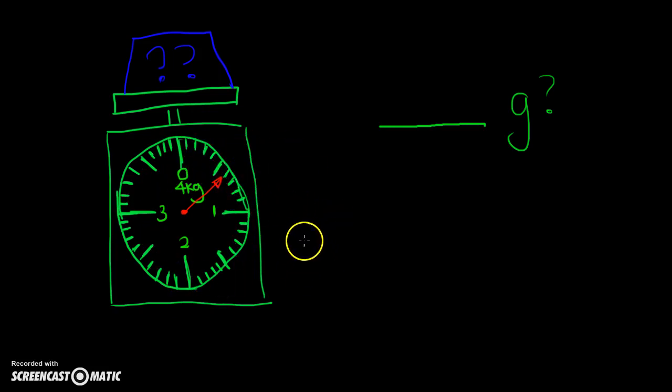And if you imagine, as you can see here, this arrow is pointing at somewhere before 1 but somewhere after 0. So we know that this weight here is actually between 0 and 1 kg because it says kg here.